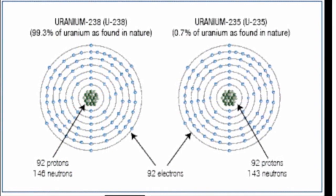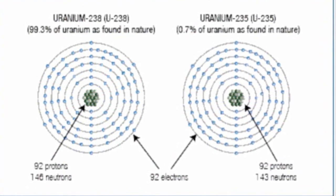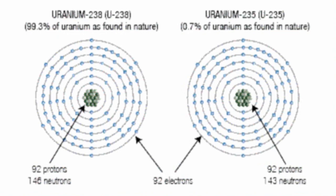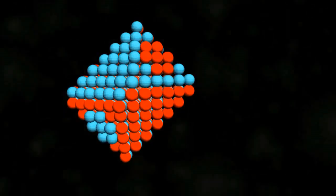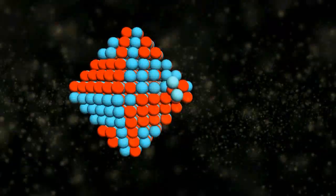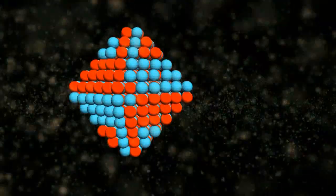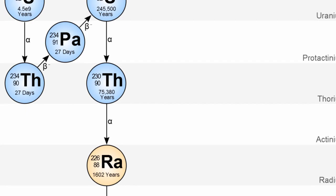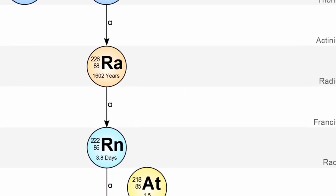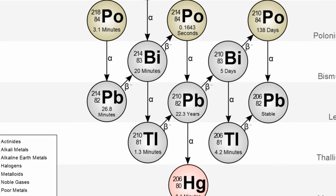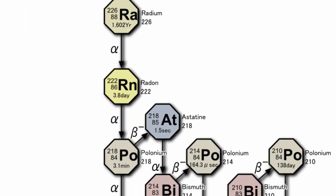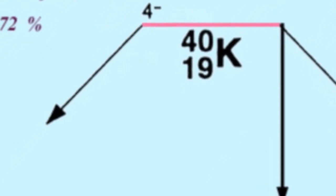For example, uranium-238 has the expected 92 protons for uranium, but it also contains an additional 146 neutrons. With that configuration, the isotope is unsteady and therefore ejects energy and an alpha particle. Each time this happens, it literally becomes a different element or isotope. When uranium-238 breaks down, it slowly becomes lead. Uranium-234 becomes thorium. Potassium-40 becomes argon.